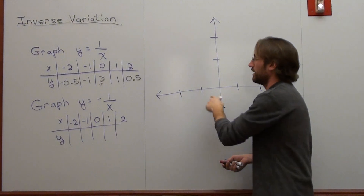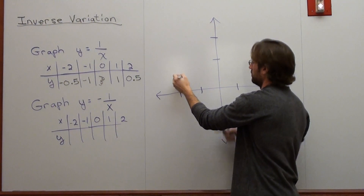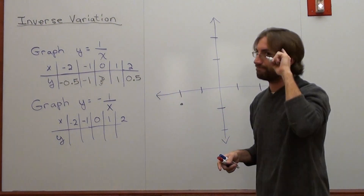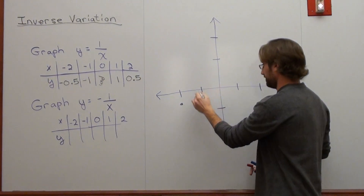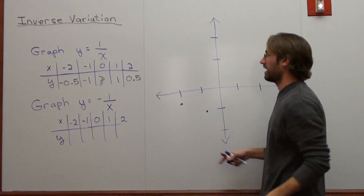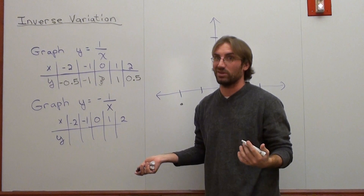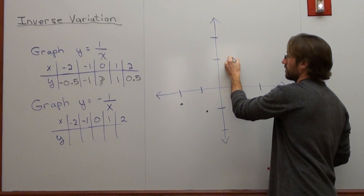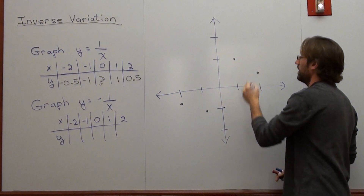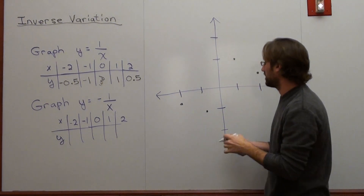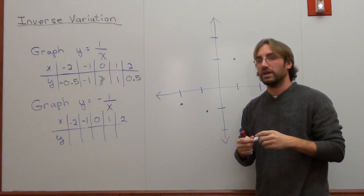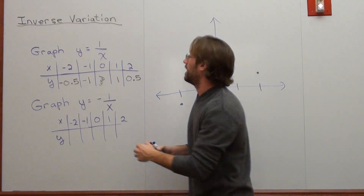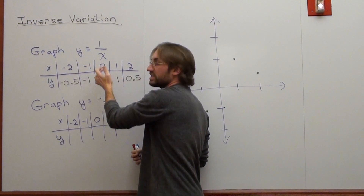So when I substitute in the values, here's what I get: negative 2 gives negative 0.5; negative 1 gives negative 1; 0 is undefined — I'm not exactly sure what's going on there yet; 1 gives 1; and 2 gives 0.5. Students are a little concerned about what goes on at x = 0, and they probably should be. Before we get to that, let's talk about this 0 point, which is undefined.